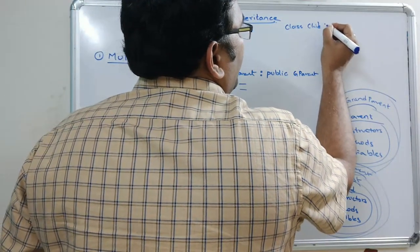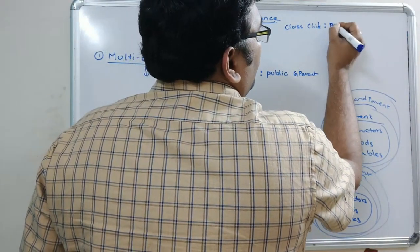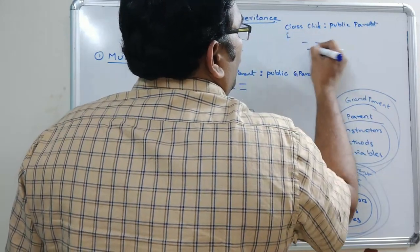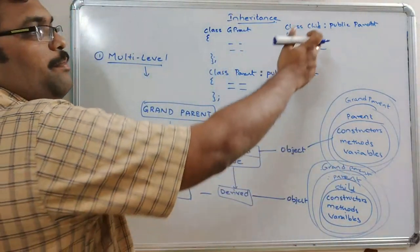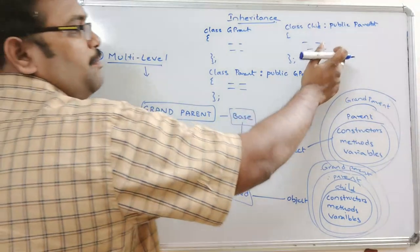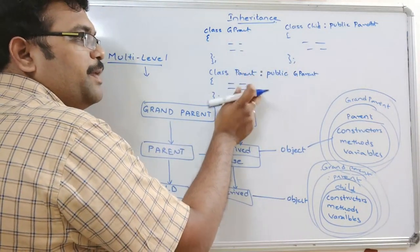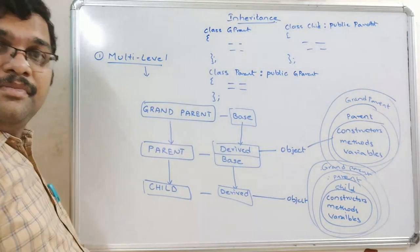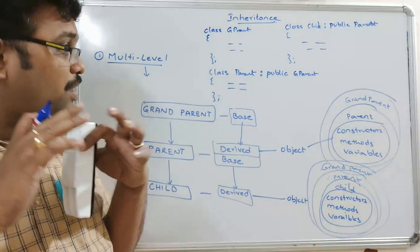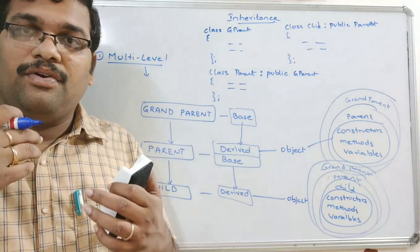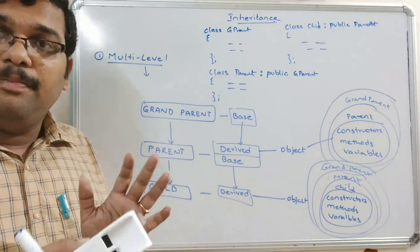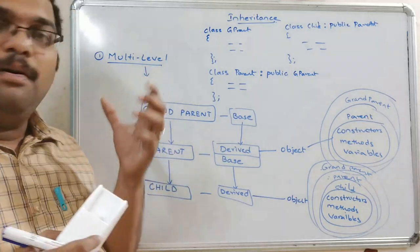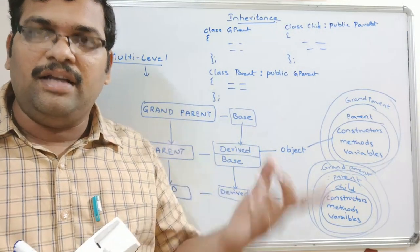So we write: public grandparent, and the child class is again inherited from public parent. With the help of the child class object we can access the methods and variables of parent and grandparent, and with the parent object we can access the variables and methods of parent and grandparent. If you have any doubts, let's move to the compiler to clarify them with a working program.